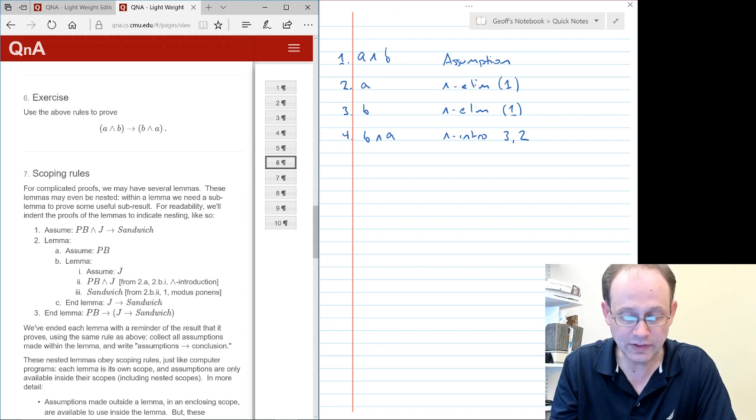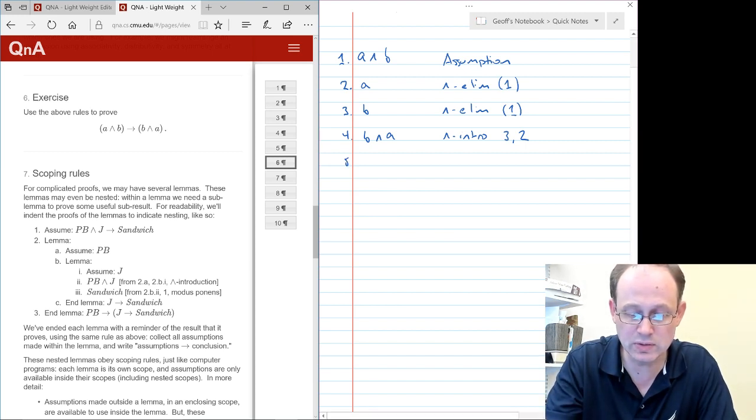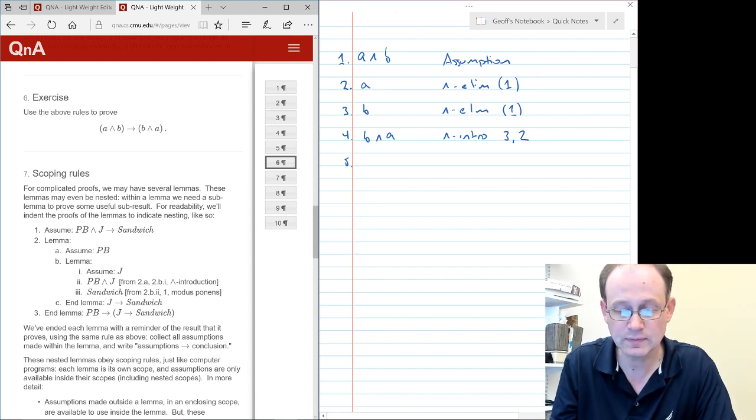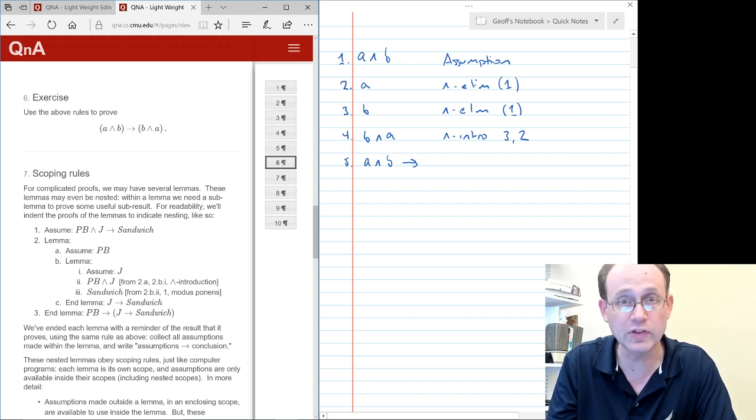And then the last thing we're going to do is end the lemma, otherwise known as using implication introduction. So with implication introduction, what you do is you can write down your assumptions A and B on the left side of an implication. And on the right side of the implication, you can pick any one of the statements that you proved from those assumptions. And so that's B and A in this case. And so this follows from implication introduction.